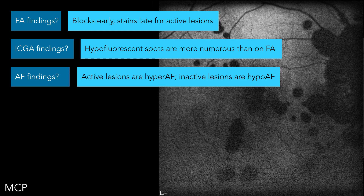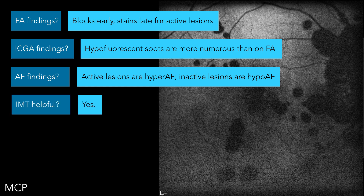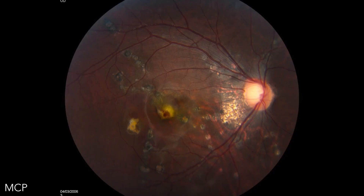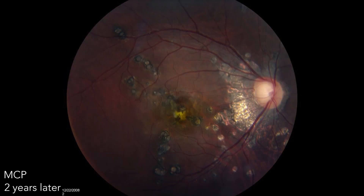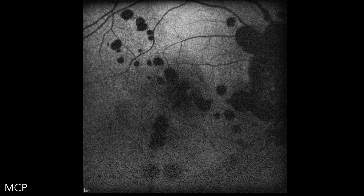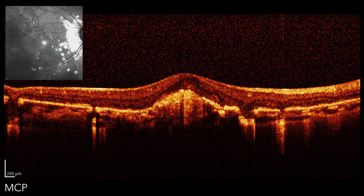Autofluorescence findings: active lesions are hyperautofluorescent, inactive are hypo — and all the ones I'm showing you on this picture are hypo, so this is all inactive. Is IMT helpful? Yes, because they have a poor visual prognosis. They also have issues with CNV. IMT does not always help CNV — back in the old days these people got steroids and some of their CNVs did get better, although nowadays most are getting anti-VEGF. This is a patient with MCP — you can see some hemorrhage there, CNV going on. Two years later, scarring up. And there's the OCT — look at those punched-out lesions. You see the hyperreflectivity in the choroid because the RPE — somebody took a hole puncher to it, and you can just see right through it.